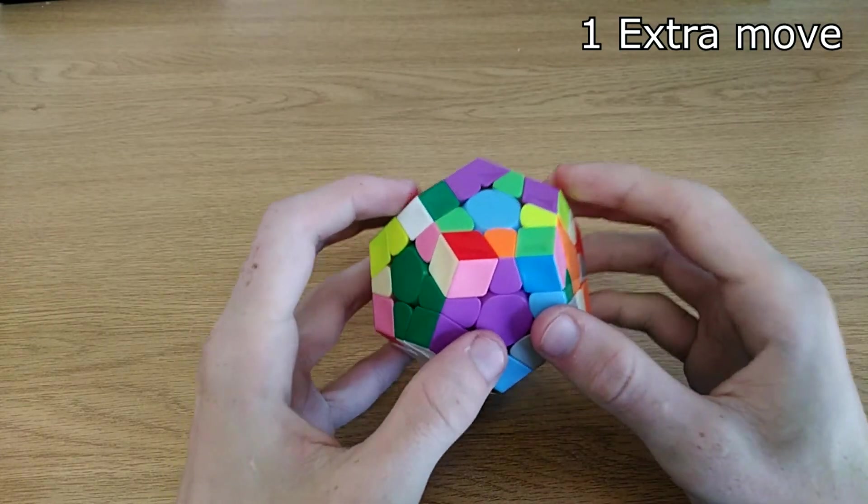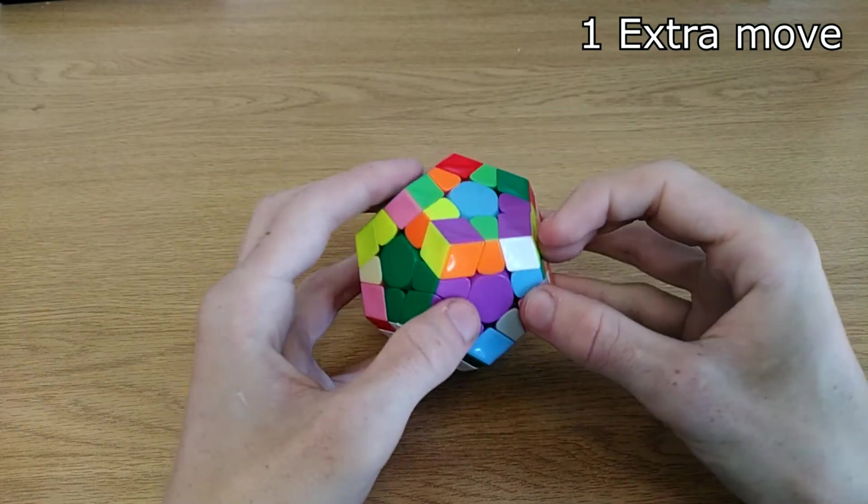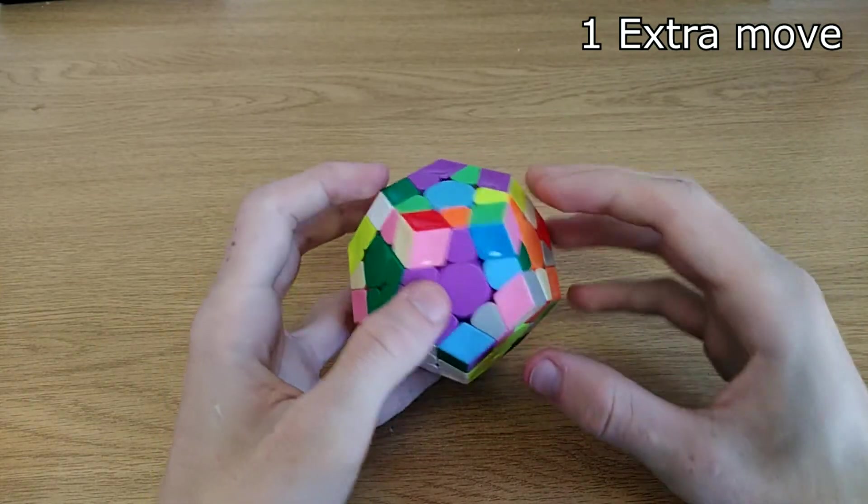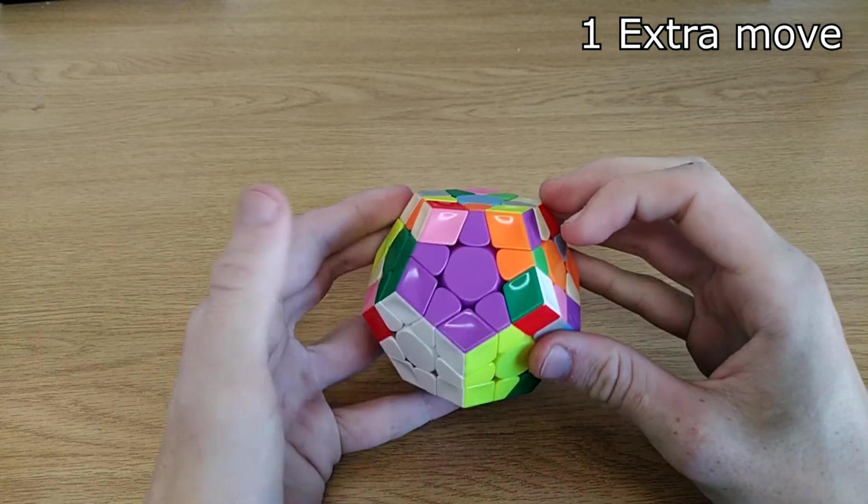Remember, this is just a concept, not a specific F2L case. So for instance, if you have this pair solving at the bottom, what I also used to do is I used to bring it all the way to the bottom, but as you can see now, you can just do an F' and insert it like that, which is much quicker.